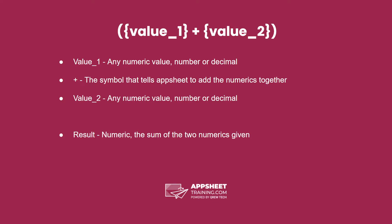The result is a numeric, being the sum of the two numerics given. It's important to know what the result will be in the end, because if you are looking for a number but return a decimal, AppSheet can return an error.